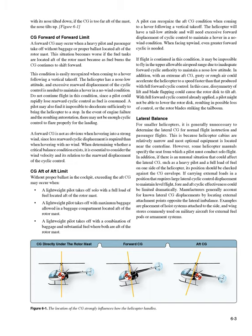In this case, dissymmetry of lift and blade flapping could cause the rotor disc to tilt aft. With full forward cyclic control already applied, a pilot might not be able to lower the rotor disc, resulting in possible loss of control or the rotor blades striking the tail boom. Lateral balance: For smaller helicopters, it is generally unnecessary to determine the lateral CG for normal flight instruction and passenger flights, because helicopter cabins are relatively narrow and most optional equipment is located near the centerline.